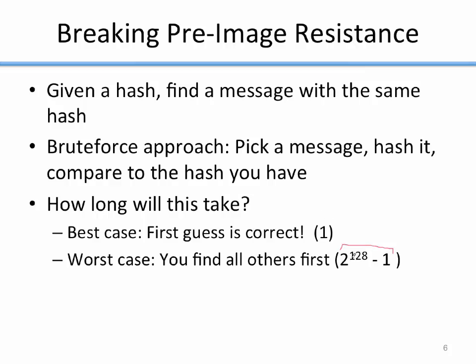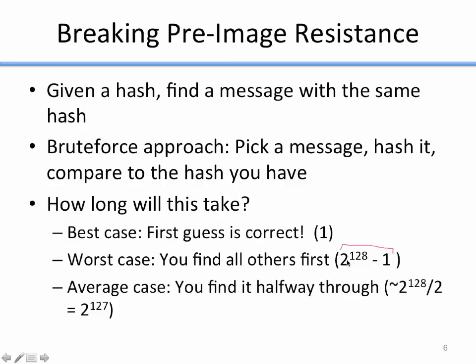On average it takes half of the worst case — about 2^128 / 2, which is 2^127. That's still an absolutely enormous number. If you tried to brute-force a 128-bit hash to break pre-image resistance, you'd need to compute for the foreseeable rest of the existence of the universe and still never break it. It's infeasible as long as the number of bits is large enough. A 32-bit hash, on the other hand, would be a significantly smaller number and you might be able to break that.